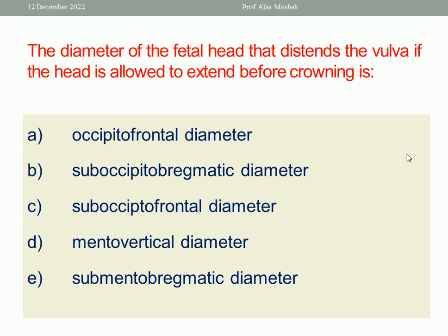This manoeuvre is done to allow the head to distend slowly, so the maximum diameter distending the vulva would be the suboccipitobregmatic diameter. If the head is allowed to extend suddenly during a contraction, it may cause vulval or perineal tear due to the larger occipitofrontal diameter of 11.5 cm presenting through the vulva.